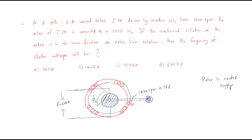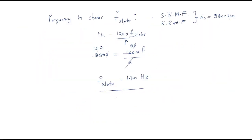When solving these problems, supply is not always given to the stator. Sometimes it is reversed — supply is given to the rotor, and the rotor also rotates with some mechanical support. The rotating flux then induces EMF in the stator conductors, since the stator has no supply but has induced EMFs.